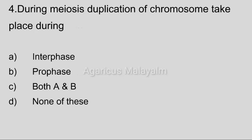Fourth question: During meiosis, duplication of chromosome takes place during? Option A: Interphase. Option B: Prophase. Option C: Both A and B. Option D: None of these. Correct answer: Option A, Interphase.